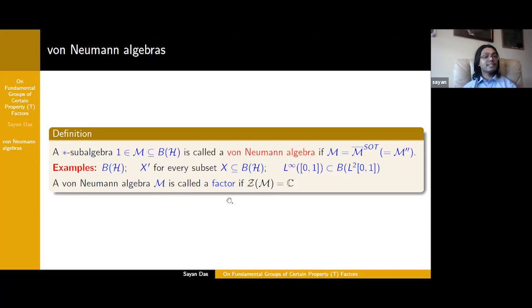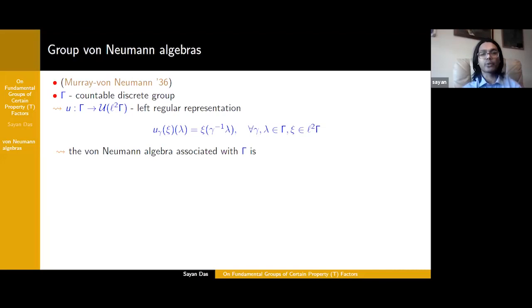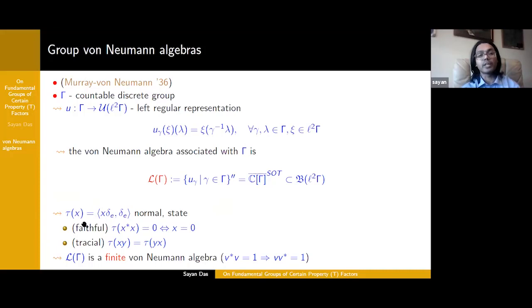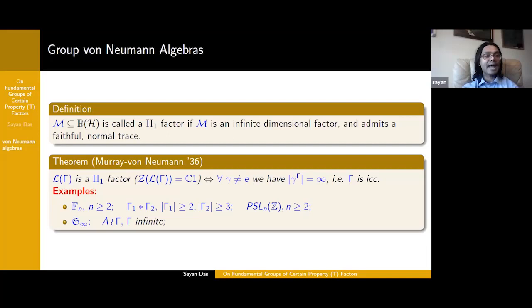So far so good, von Neumann was pretty pleased with the development, except he had the nagging question: are there any other examples? He gave this problem to his postdoc Murray. They quickly realized that there are indeed other examples coming from groups, the so-called group von Neumann algebras, which we saw in the last talk and in Professor Peterson's talk this morning. The important facet of this construction is that you have a normal faithful trace state, which makes L(gamma) into a genuinely different object from B(H) when H is infinite dimensional. This finiteness condition is really the key difference. These are the objects that they call a II_1 factor, and the key example was group von Neumann algebras when your group is ICC.